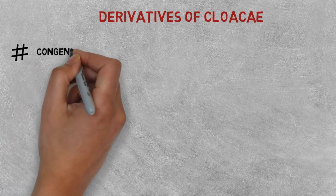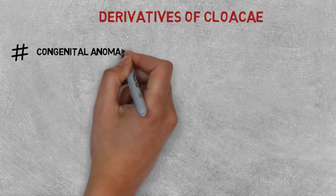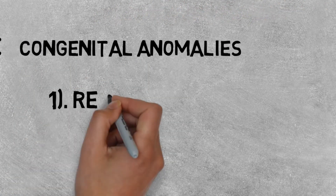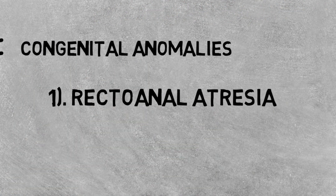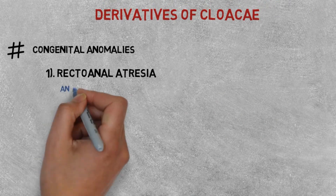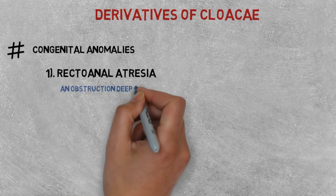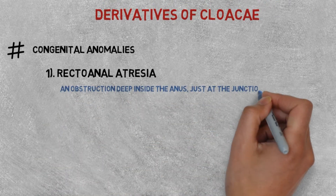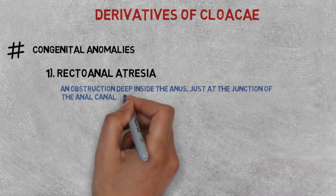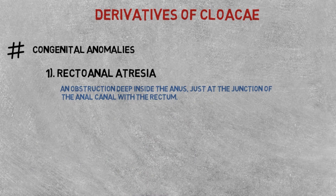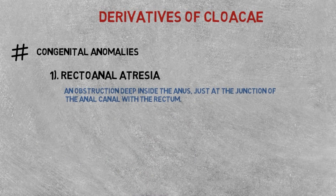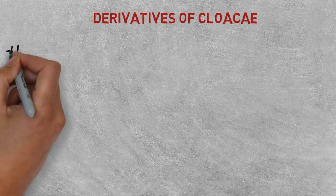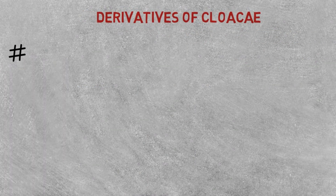Now for the congenital anomalies of derivatives of cloaca. The first is recto anal atresia, which is an obstruction deep inside the anus, just at the junction of the anal canal with the rectum.